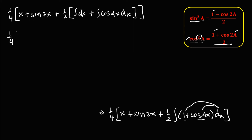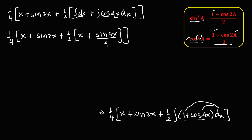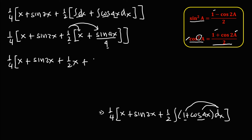So we have 1 over 4 times x plus sine 2x, plus 1 half times: integrating every term, the integral of dx is x, plus the integral of cosine 4x — since the integral of cosine is positive sine — gives sine 4x over the derivative of 4x, which is 4. Then simplify: we have 1 over 4 times x plus sine 2x, plus distributing the 1 half gives 1 half x, plus 1 half over 4 — that's 1 over 8 — times sine 4x.